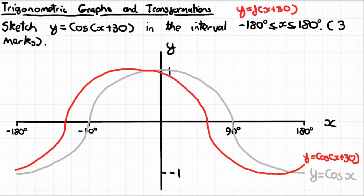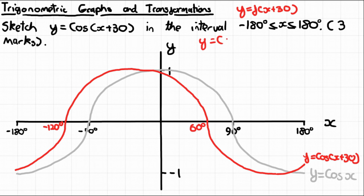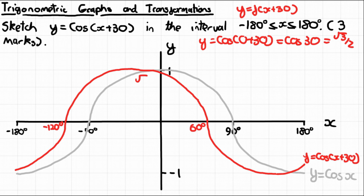We need to label the points of intersection with the axes. The x-coordinates are easy - it's just shifted left by 30, so one intersection is -90 - 30 = -120 degrees, and another is 90 - 30 = 60 degrees. For the y-intercept, when x = 0: y = cos(0 + 30) = cos(30) = √3/2. So the y-intercept is √3/2, and that's the final answer.